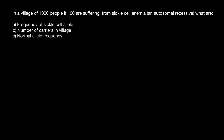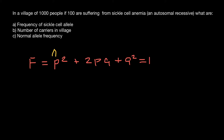In order to solve this population genetics problem, all we need to know is the Hardy-Weinberg formula, where the frequency of the three genotypes produced by two alleles equals p² + 2pq + q², and all this equals one. In this formula, p² stands for the homozygous dominant genotype, 2pq stands for the heterozygous genotype, and q² stands for the homozygous recessive genotype.